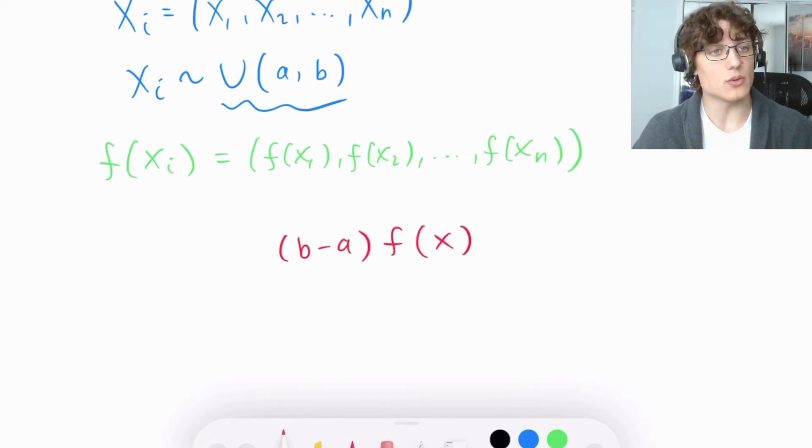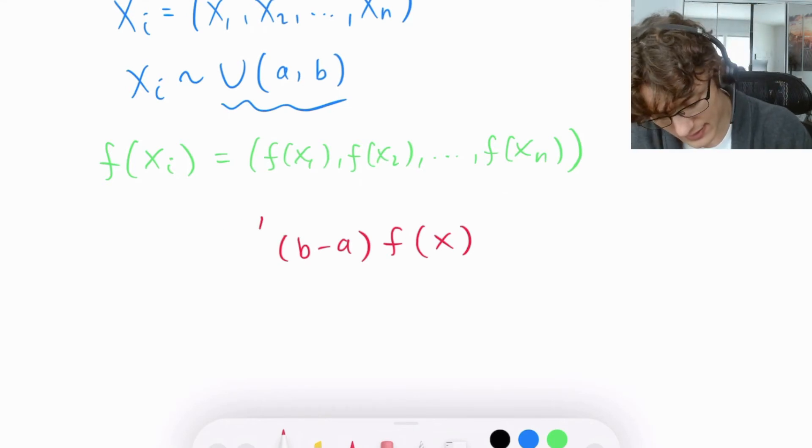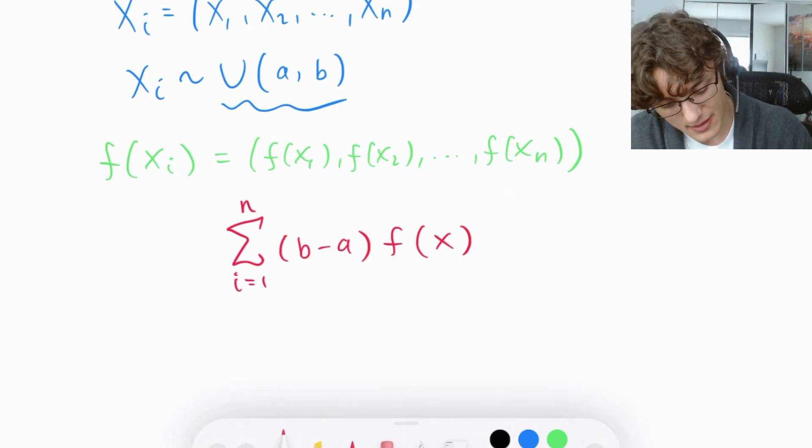Now what we can do is we can sum the area of each of these rectangles across all of our samples by doing a summation from i equals the first sample to the nth sample. And then we take the fixed area across the x-axis, our width,